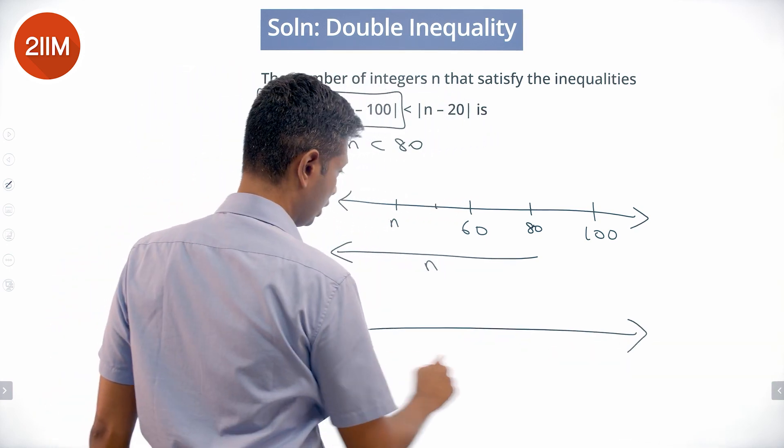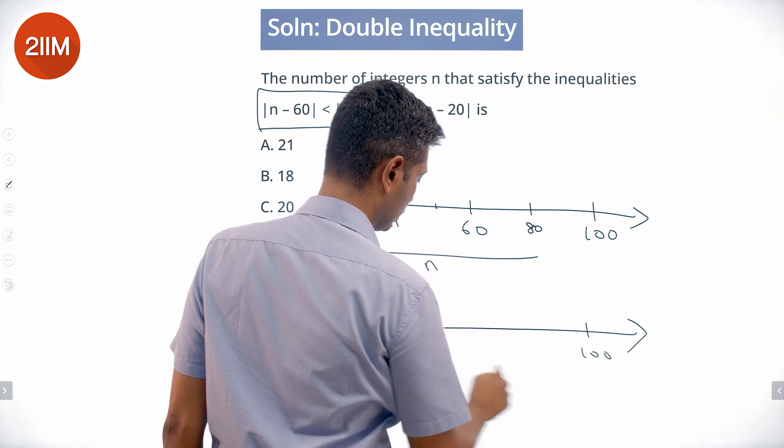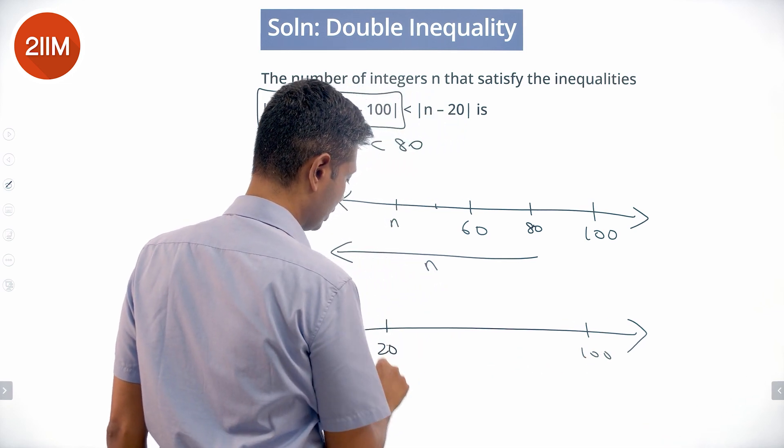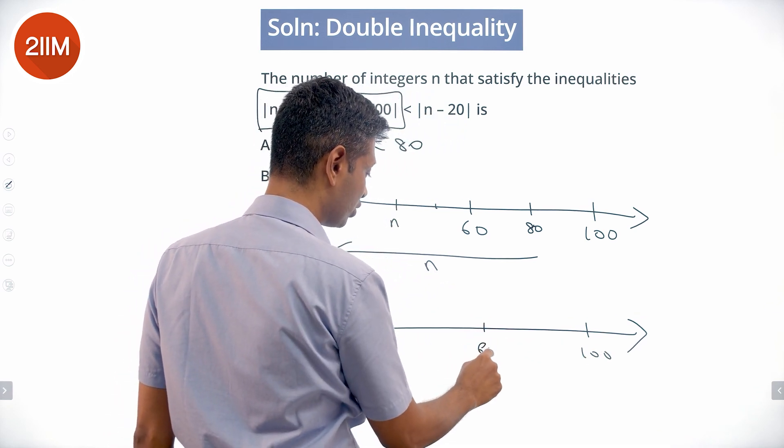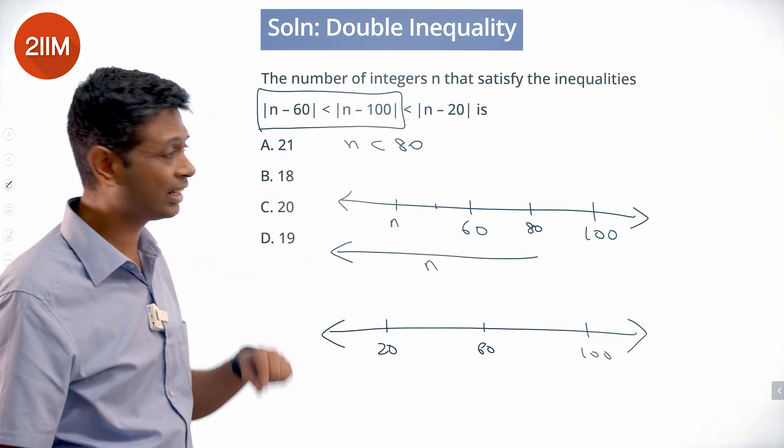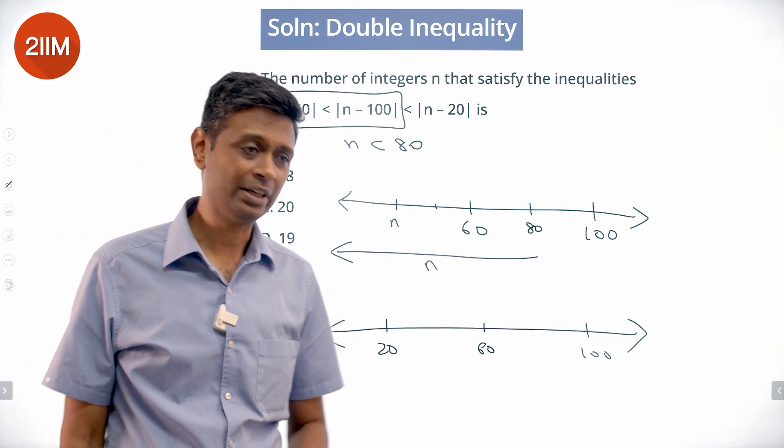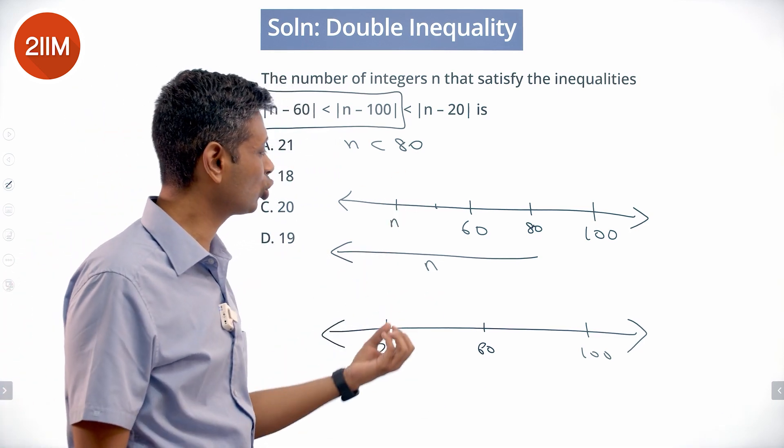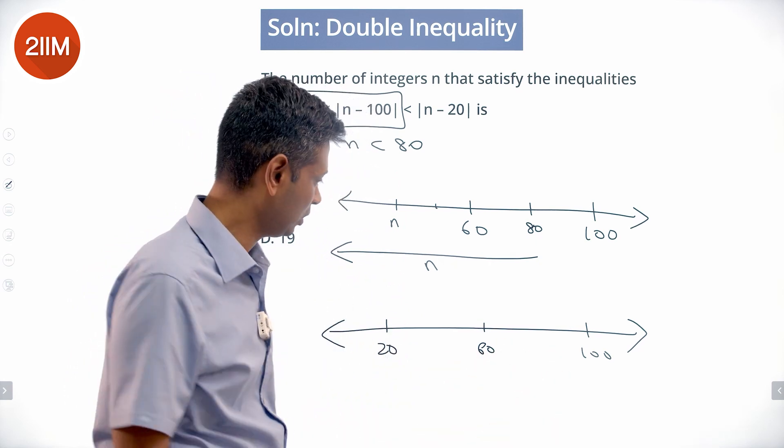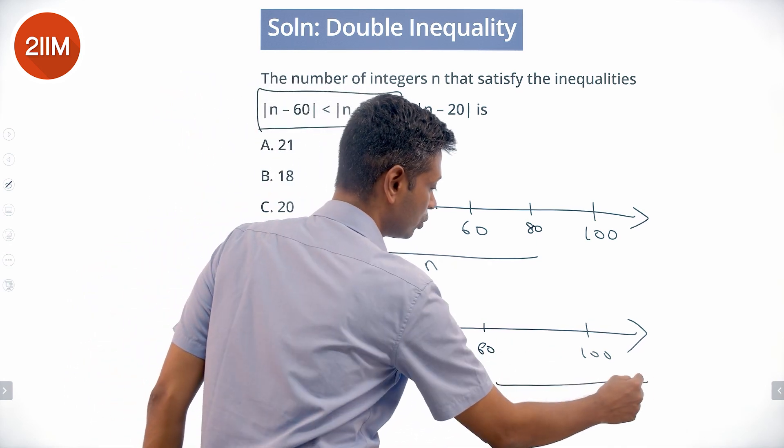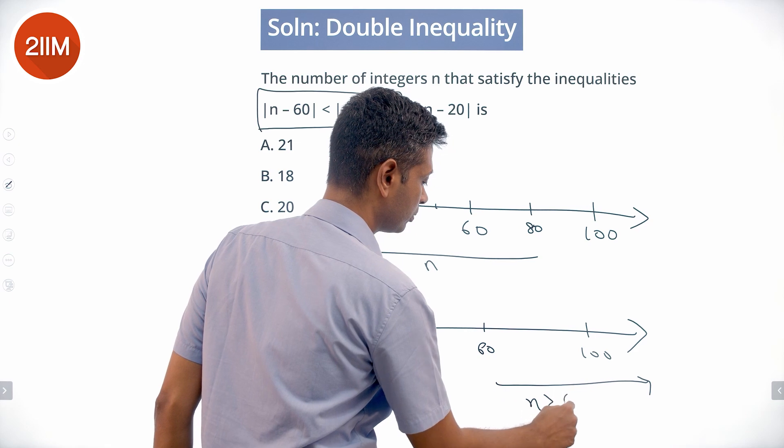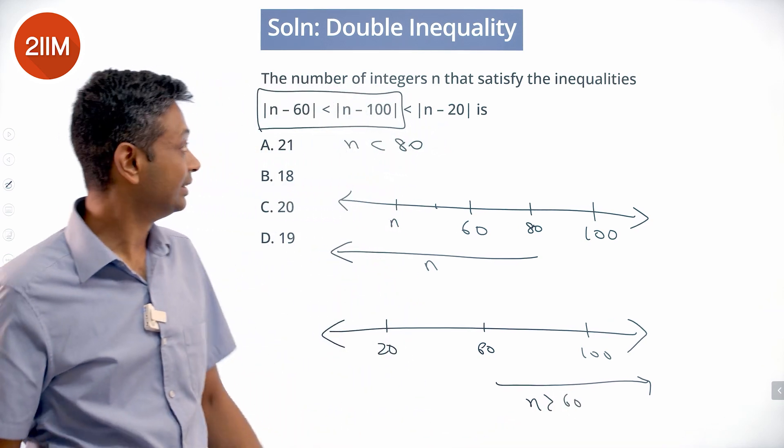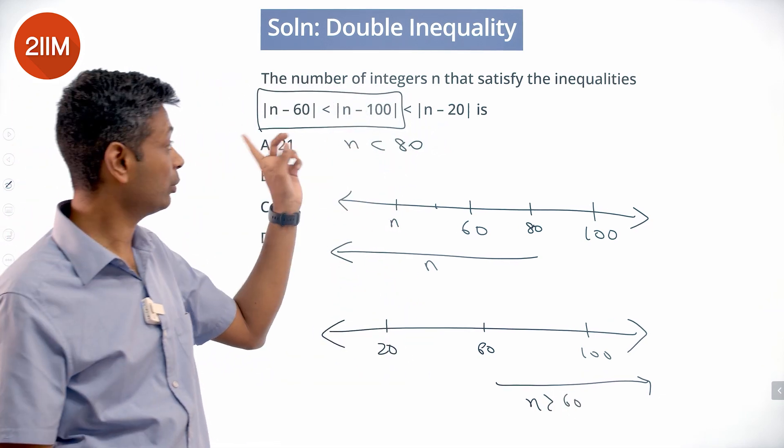For this we're thinking about 100 and 20. We know straight away that the turning point is 60. Distance from 100 is less than distance from 20, or n should be greater than 60. This one works when n is less than 80, that one works when n is greater than 60.